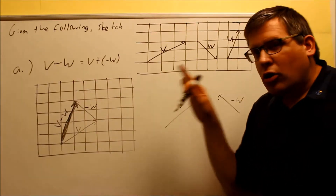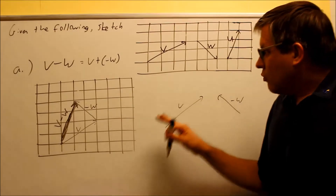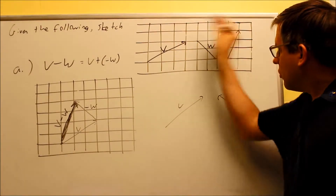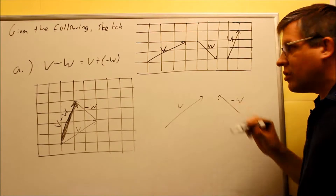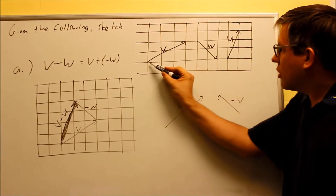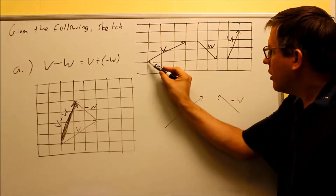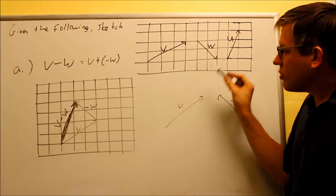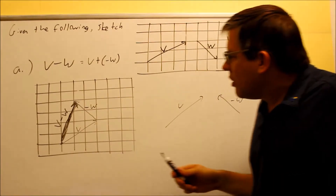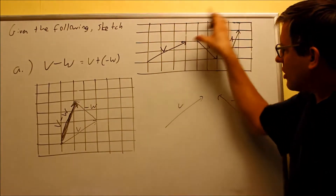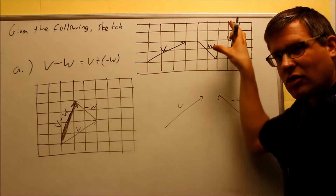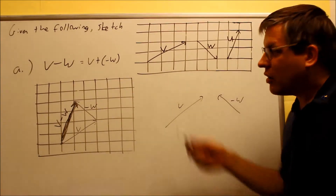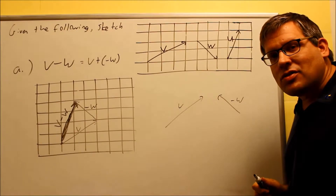It doesn't matter where you draw it inside the grid — I would get exactly the same result. I'm basically going to go over one and up four — that's what my final answer would be. With the grid lines, I have to make sure I draw it according to what's given: over three, up two for V, and down two, over two for W. That's why they give you these grids — so you have an idea of how to draw them. Now let's take a look at parts B and C.